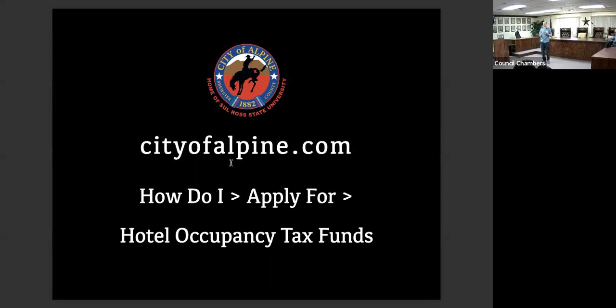Here is where you can find information, including the guidelines and applications for the grants, at cityofalpine.com. In the top menu on the far right-hand side, go to 'How Do I,' then down to 'Apply For,' and select 'Hotel Occupancy Tax.' That will take you to the page with a link to the document, which is the guidelines and application in one PDF file. It also has a sample budget and other resource links, including a promotions event workshop we did earlier this year.